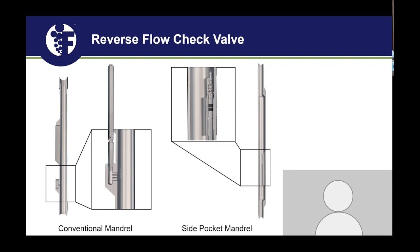The gas valve threads into the check, which then threads into the mandrel. For wireline operations, there's a different, larger-ID mandrel configuration that allows a wireline or slickline tool to set and retrieve the valve. If an operator needs to change design, they can go in with slickline and pull that valve without having to trip the whole system out with a workover rig — they use a kickover tool.